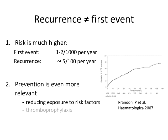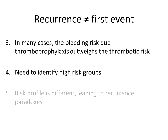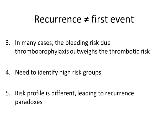Prevention can be done either by reducing exposure to risk factors, or when this is not possible, by giving prophylaxis — and that's what Dr. Ageno just addressed. Because the bleeding risk will often outweigh the thrombotic risks, it's necessary to identify low- and high-risk groups. Another remarkable difference between recurrence and first events is that the risk profile is so different, and that's why we see these strange paradoxes that I will talk about.